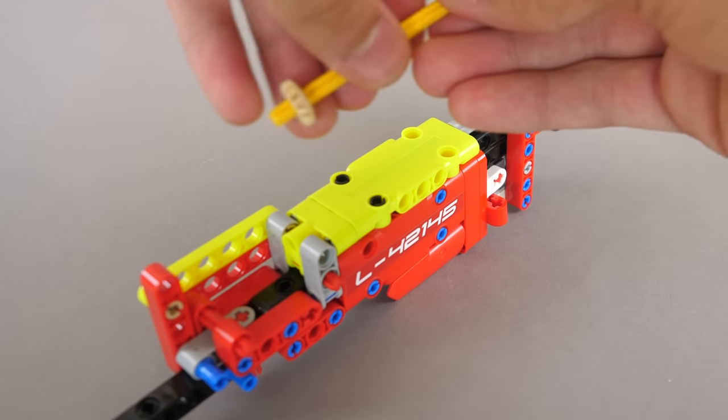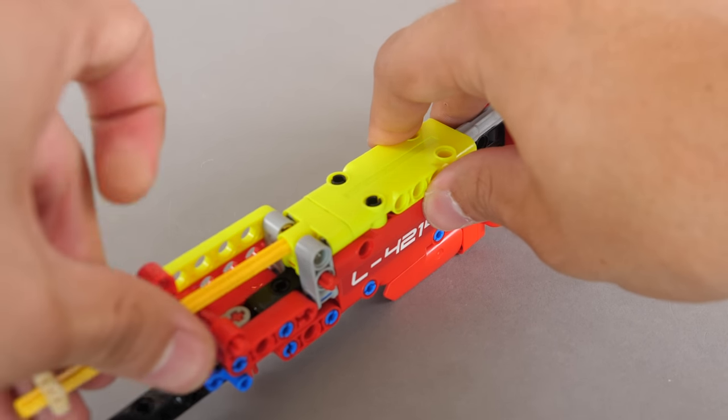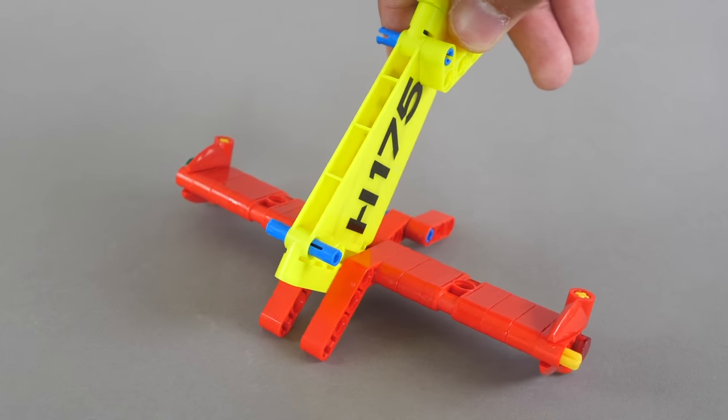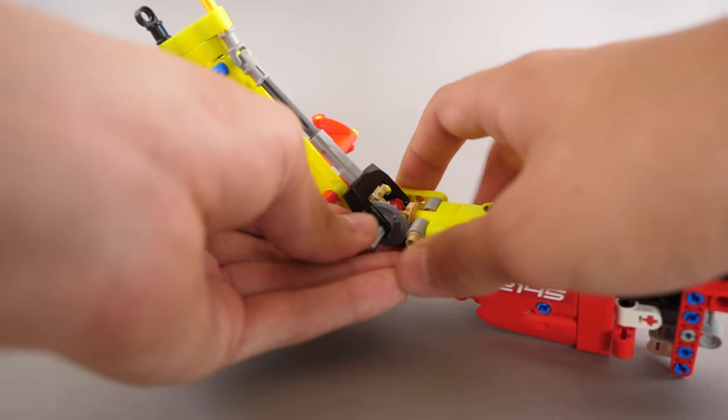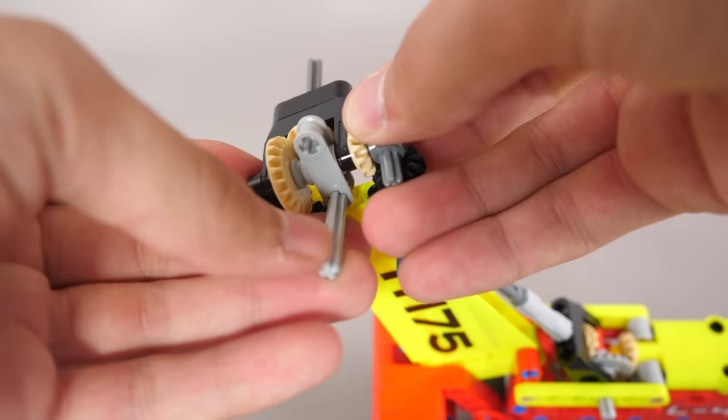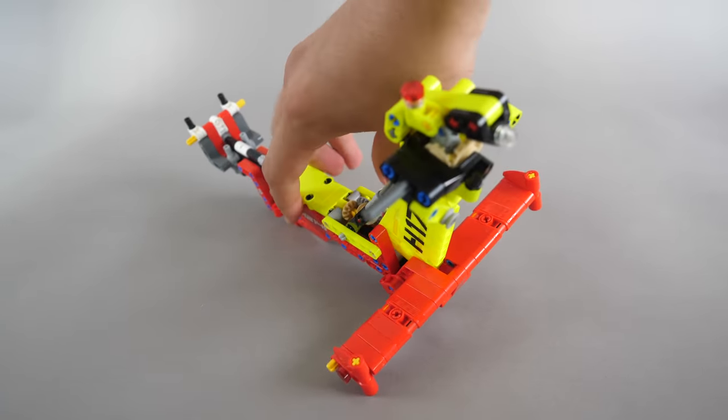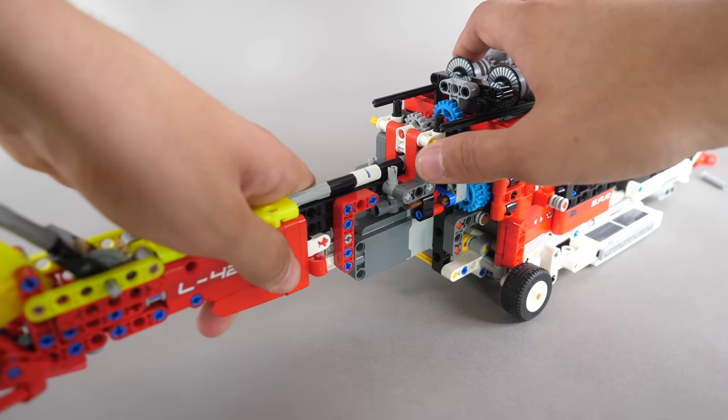Then, we add a neon yellow panel on top, and slide a Technic axle into the panel. The end of the tail is built up, and we simply connect it onto the main tail portion. We add a few more gears onto the tail, and now, this section is complete. We take the tail and simply attach it onto the main helicopter chassis.